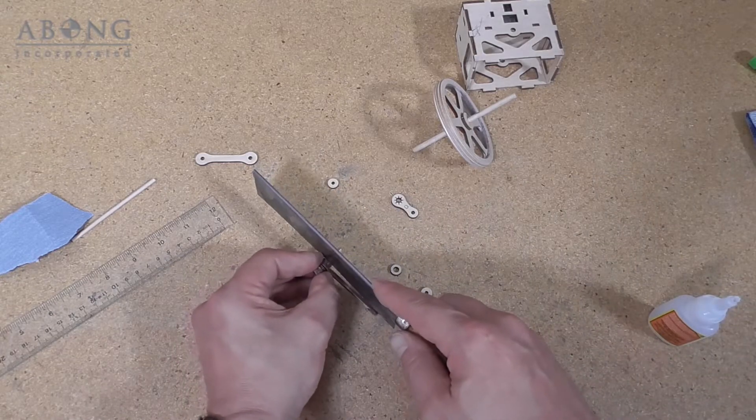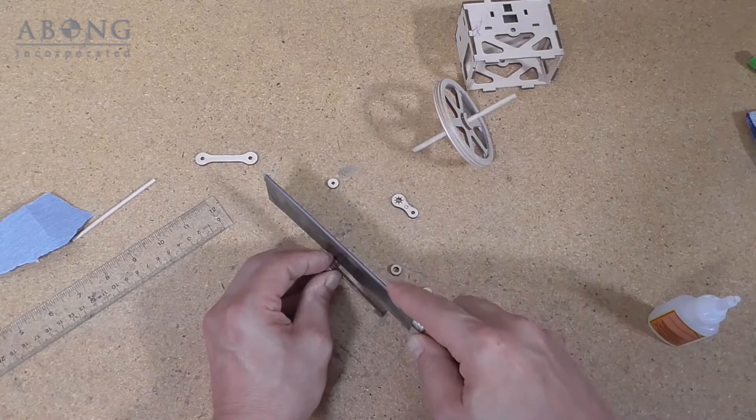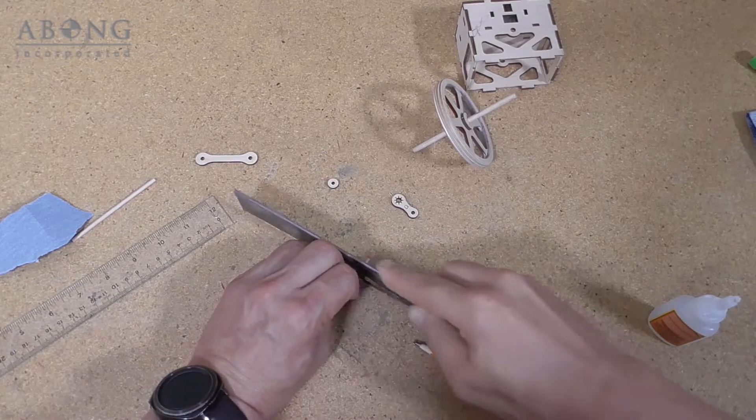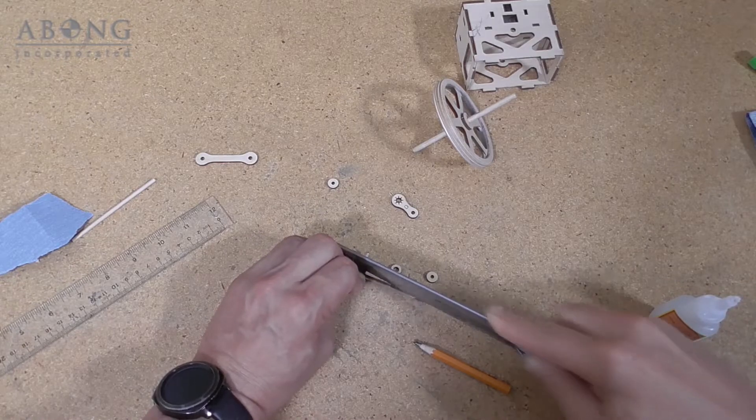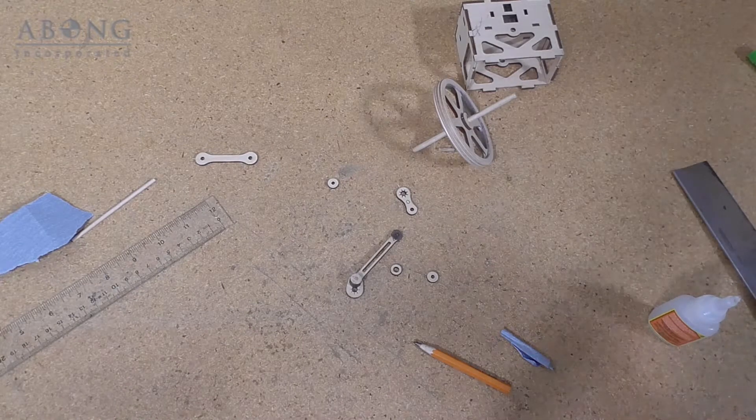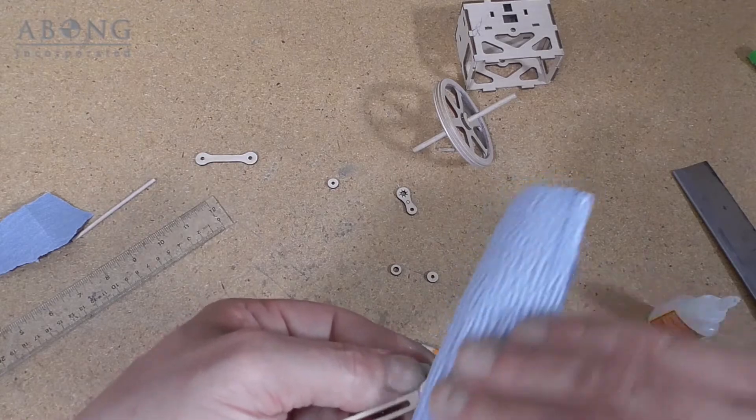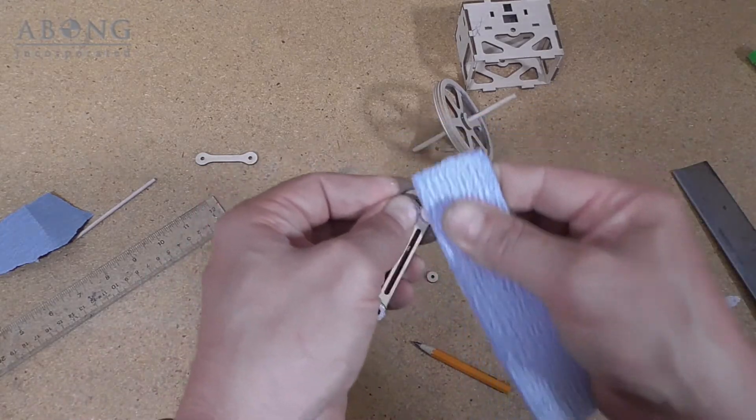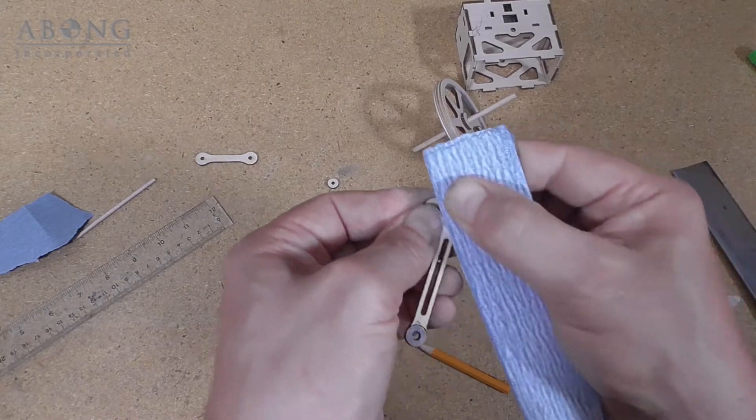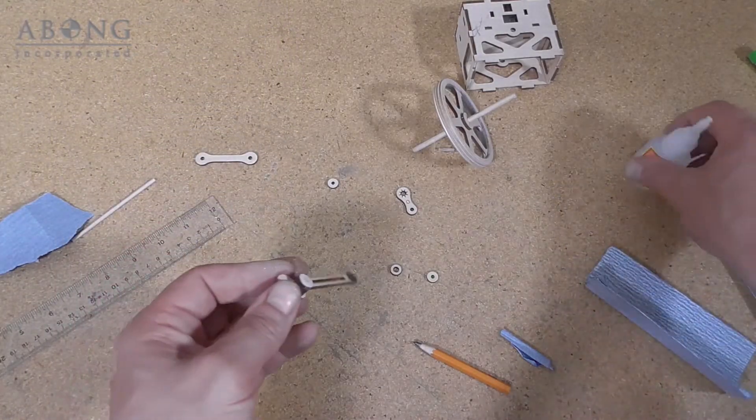So now we're going to trim the pin down to the retaining rod. This is why the length wasn't critical. And I can just use my sandpaper and trim that flush. So that's the eccentric rod.